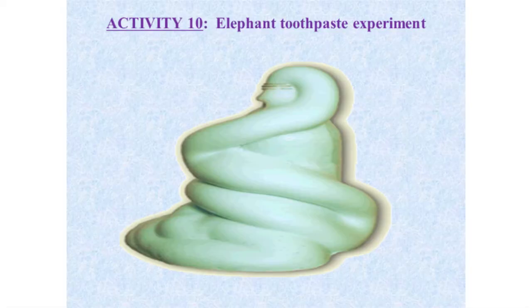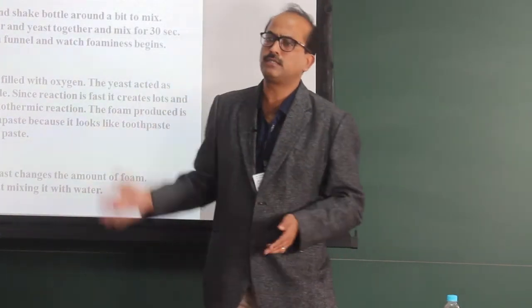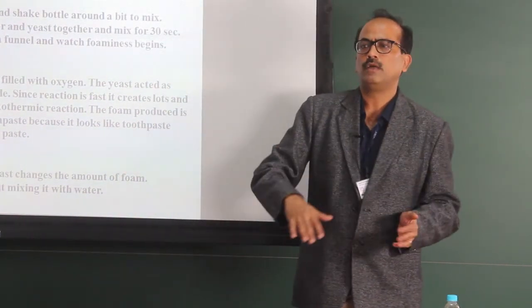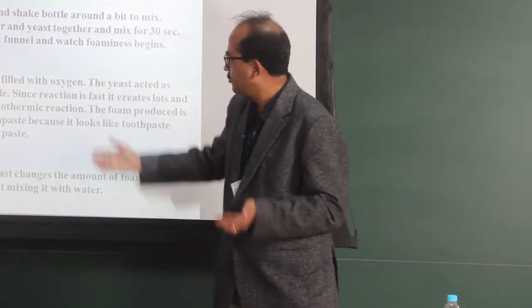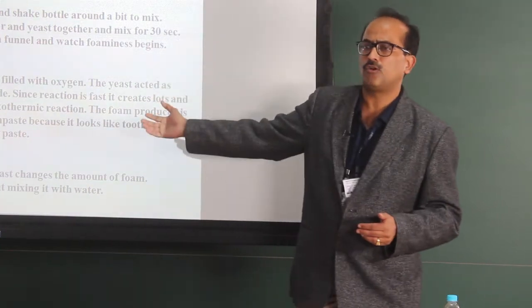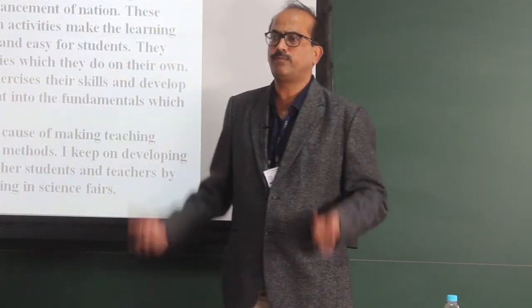This is the elephant toothpaste experiment, a very interesting activity in chemistry. You have to take hydrogen peroxide in a conical flask, then add some food color and liquid soap, and in the other flask you can take yeast along with warm water. When you mix the two, hydrogen peroxide is a very strong oxidizing agent, the bubbles will come out and you can see the paste foaming out.